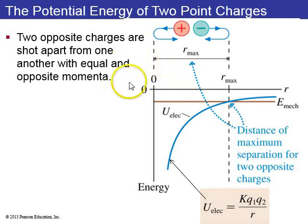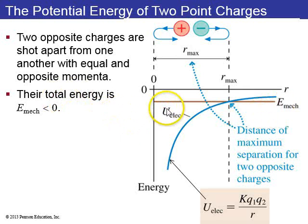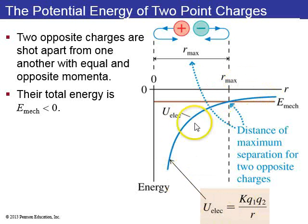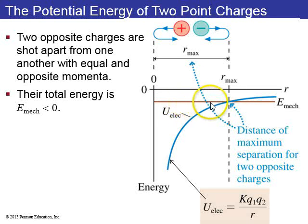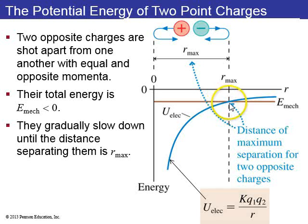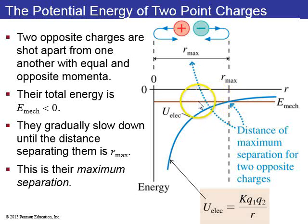For opposite charges moving away from each other, the total mechanical energy is negative — a bound system. The electric potential energy kq1q2/r is negative since q1 and q2 have opposite signs, giving an inverted curve. As the particles move apart, kinetic energy decreases until it reaches zero at r_max, the maximum separation. The particles then turn around and move back toward each other.